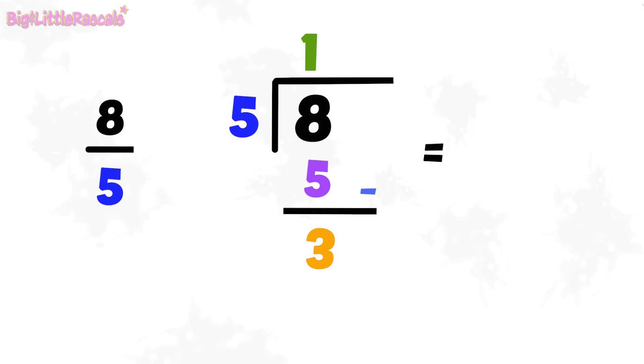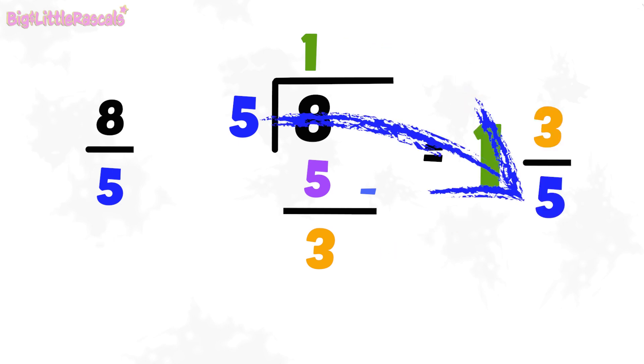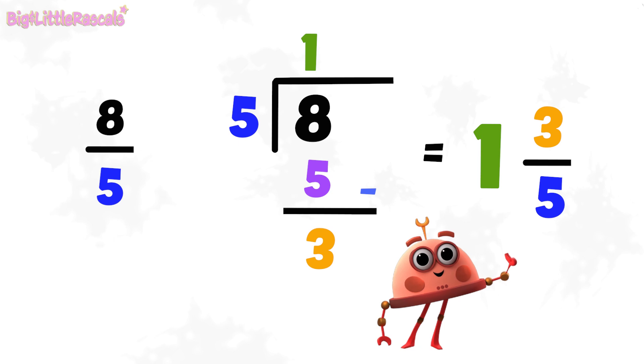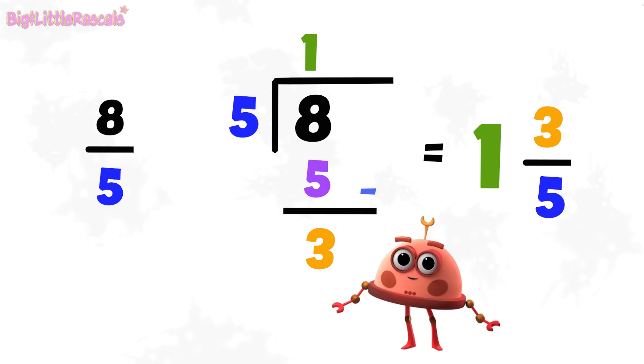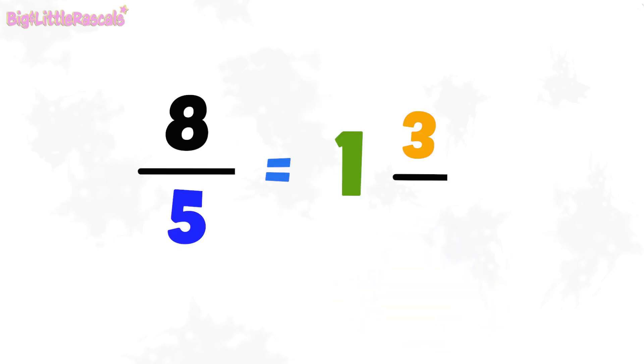Eight out of five is equals to one, three out of five. Or, one, three, fifths. Yay! We got the mixed numbers!